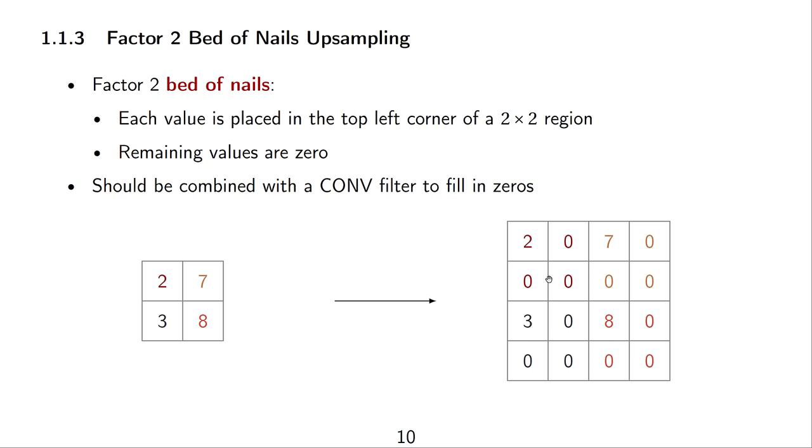This bed of nails upsampling just takes the value of 1 pixel in the input image and puts it in the top left position of a 2 by 2 subimage. So, for example, this 7 will be placed in the top left of this 2 by 2 subimage that is color coded and all the other locations in this subimage will receive the value 0. Also, we can see how this 3 will be placed here and in this 2 by 2 subimage, all the other values will be 0. This type of upsampling is then typically combined with a convolutional filter to fill in the zeros.